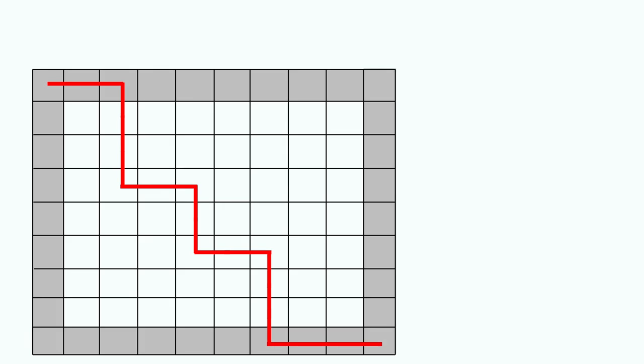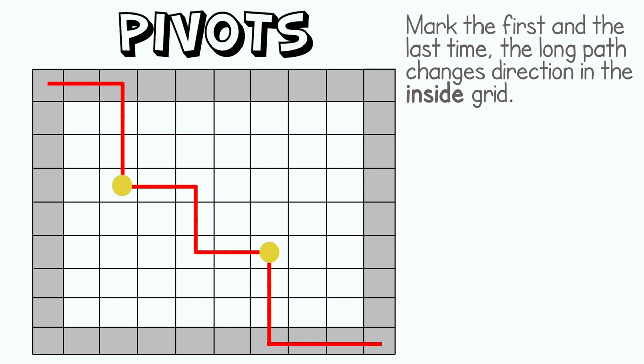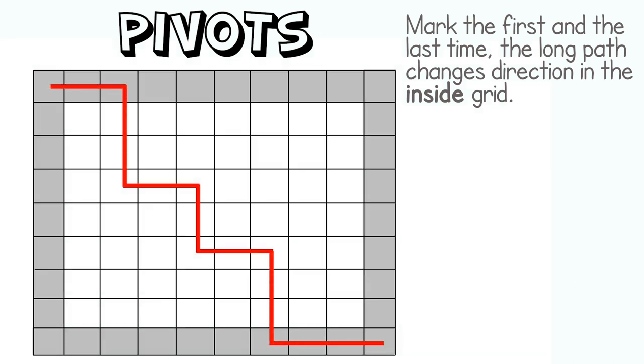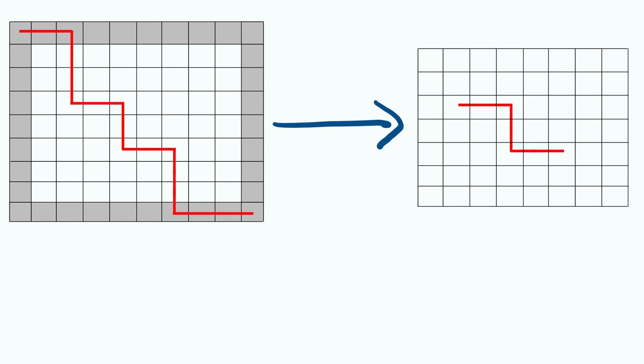Here's the genius of the proof. Mark the first and the last time that the long path changes its direction in the inside grid. Call these points as pivots. Okay, let me say it again. Look at the inside grid, see when the long path takes a turn and mark the first and the last points to find our pivots. Now, keep only the part of the path between the pivots and erase all else to make the lattice path. You can also see that if you had started with a lattice path instead, it's easy to reconstruct the long path from which it came from. Now we see how a long path can give us a lattice path.